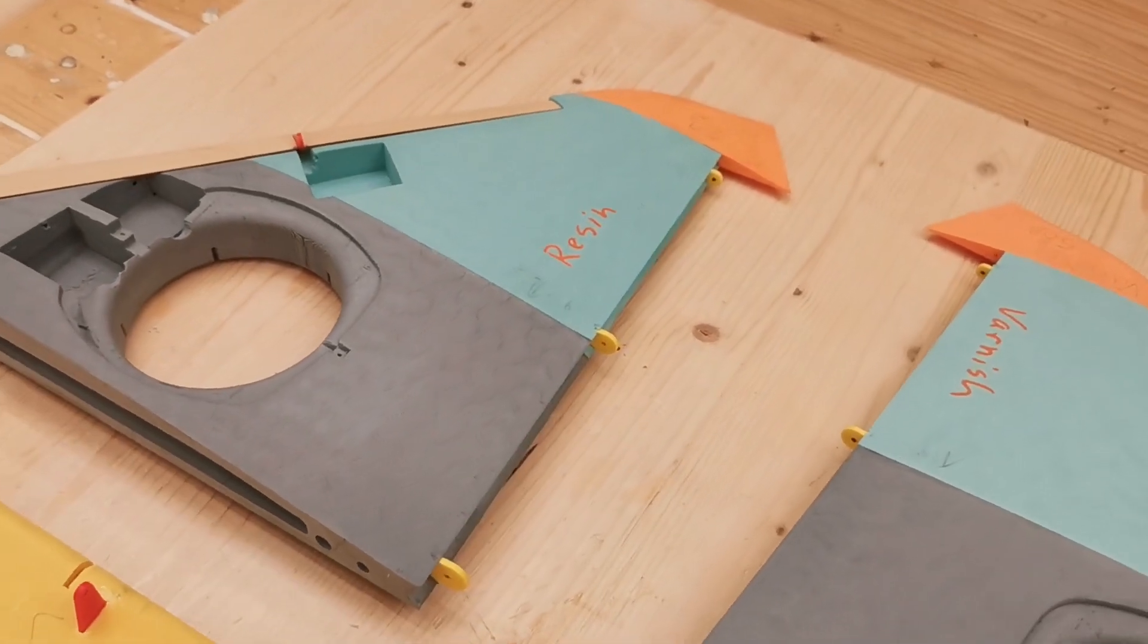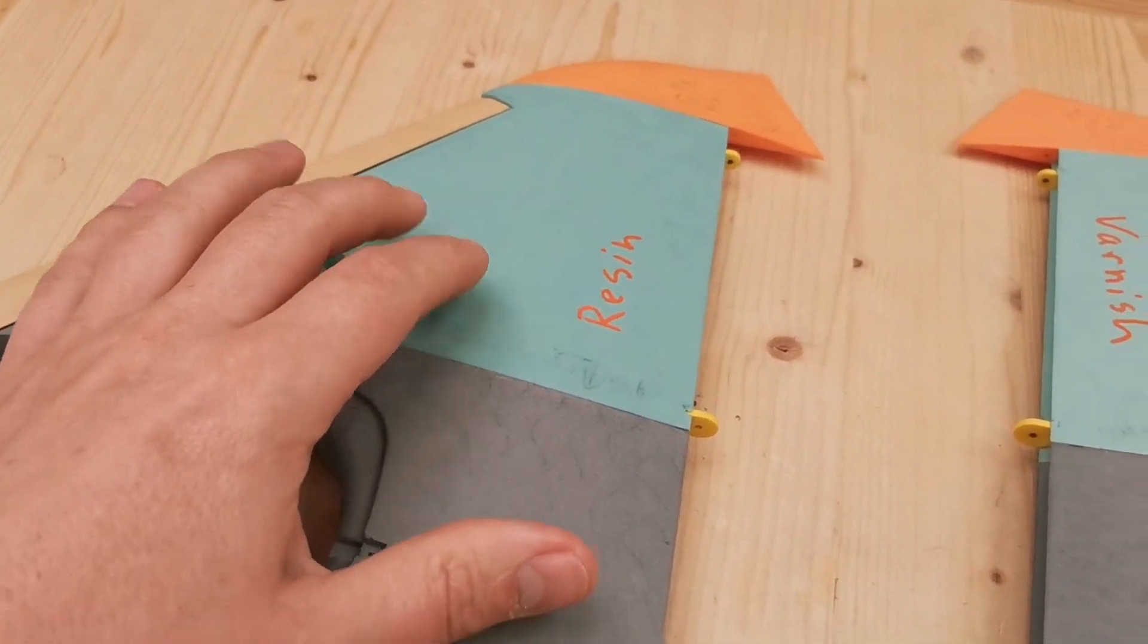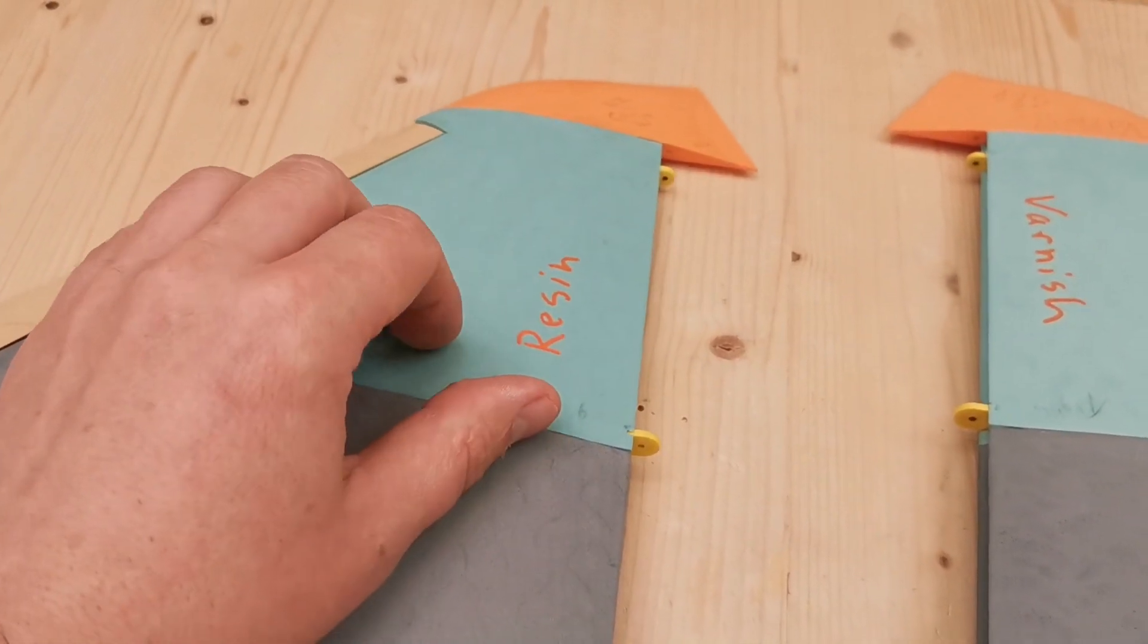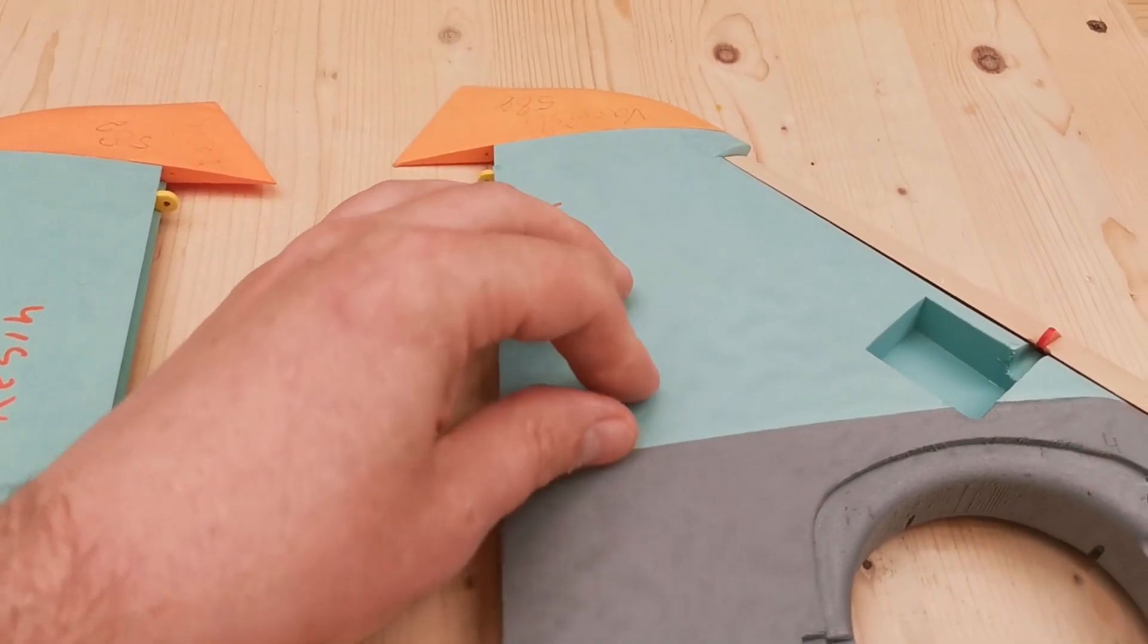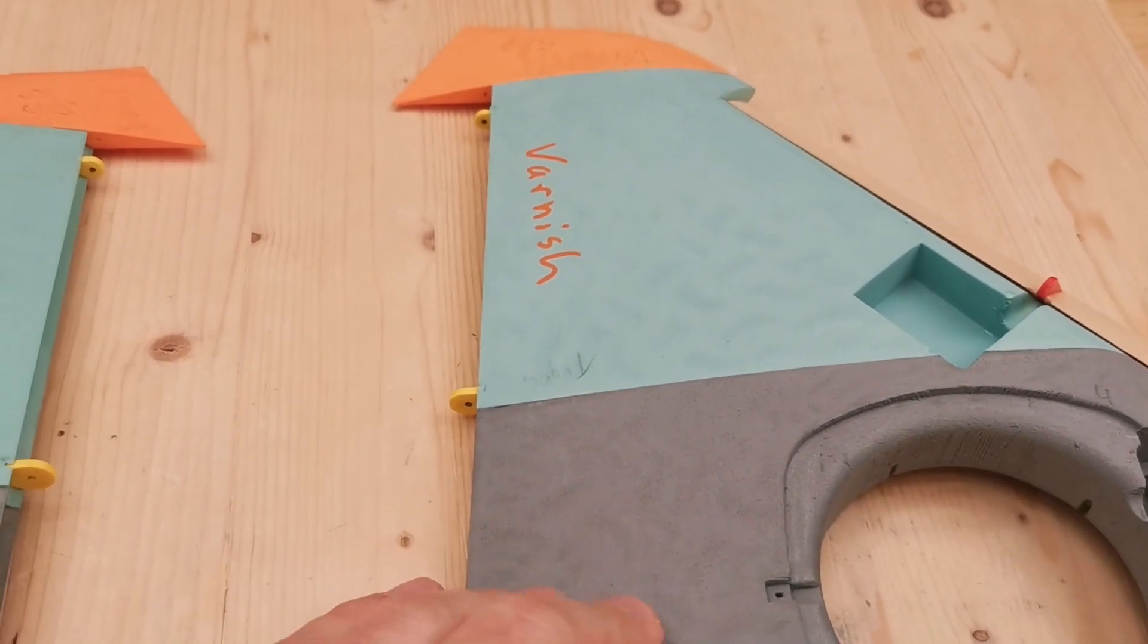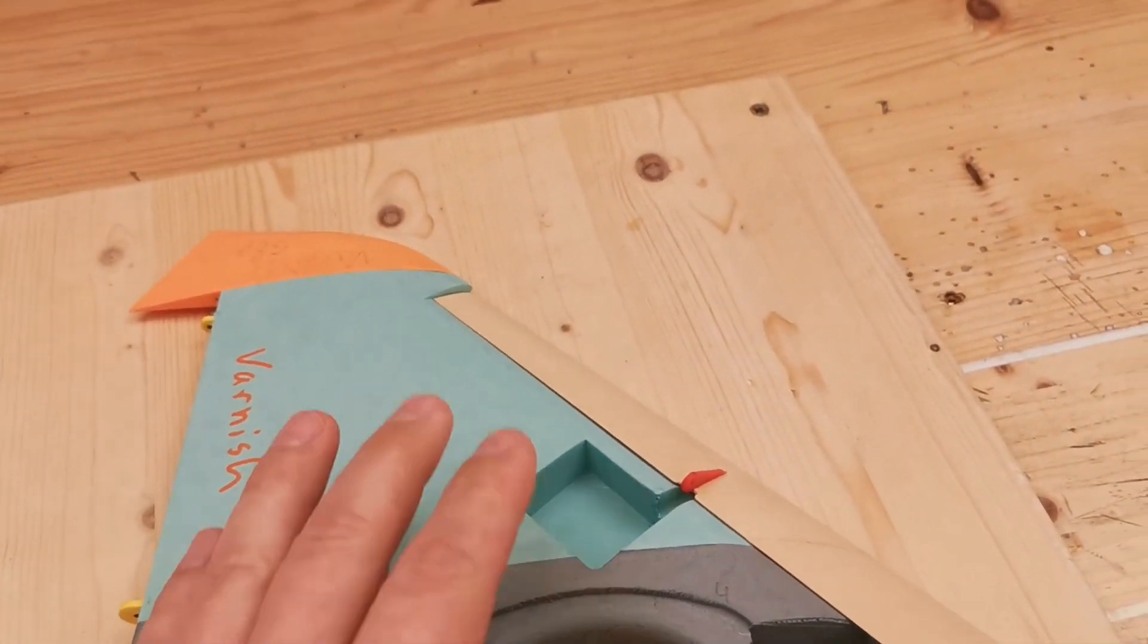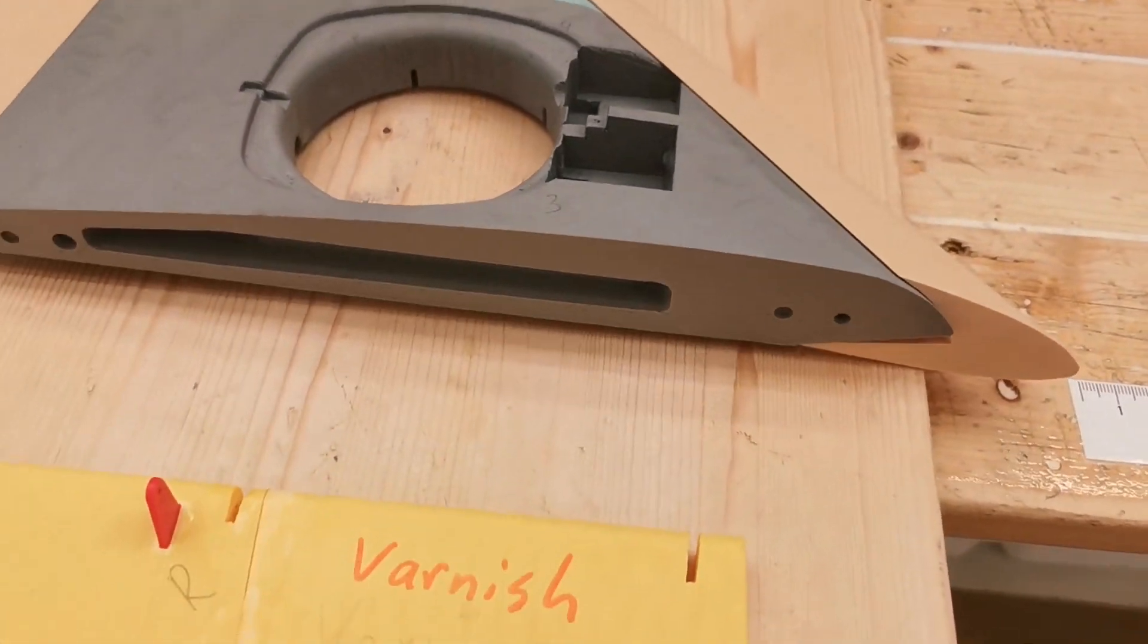So these parts are now cured for 24 hours. Let's examine them. Here we've got the resin wing. The surface is quite rough, feels a little bit like sandpaper. And the varnish is still smooth. It's also getting a bit more rough than without, but I think this has to be sanded. So let's take a look at the weight.